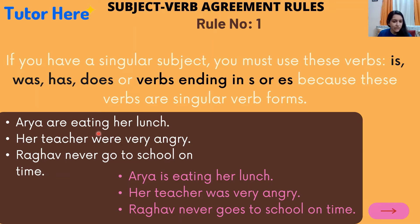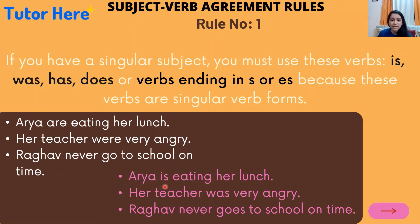Consider these incorrect sentences: 'Arya are eating her lunch,' 'Her teacher were very angry,' and 'Raghav never go to school on time.' The subjects Arya, teacher, and Raghav are all singular, but the verbs 'are,' 'were,' and 'go' are plural verb forms — they are not agreeing with the subject. The correct answers are: 'Arya is eating her lunch,' 'Her teacher was very angry,' and 'Raghav never goes to school on time.'